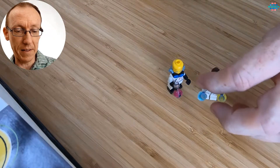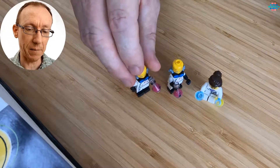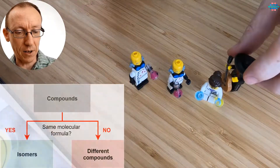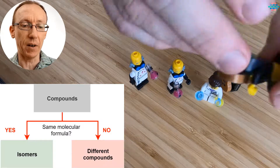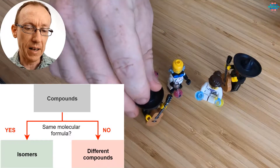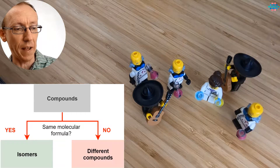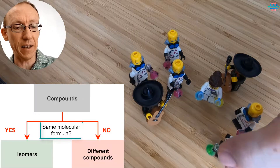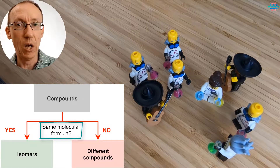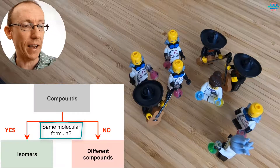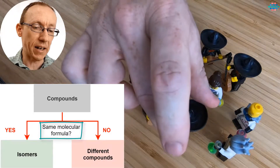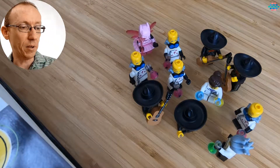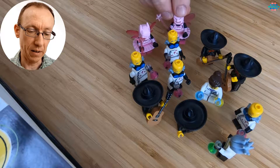I'm going to demonstrate the concepts around isomers using these guys and girls. The first thing we need to decide when looking at molecules in terms of isomers is: are these molecules isomers, or are they just different compounds? If they're isomers, the rule is they must have the same molecular formula — the same building blocks or atoms. For example, all compounds that are C6H10 are isomers because they have the same molecular formula.